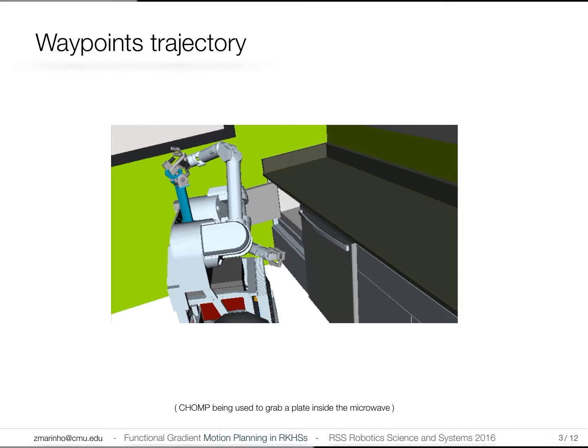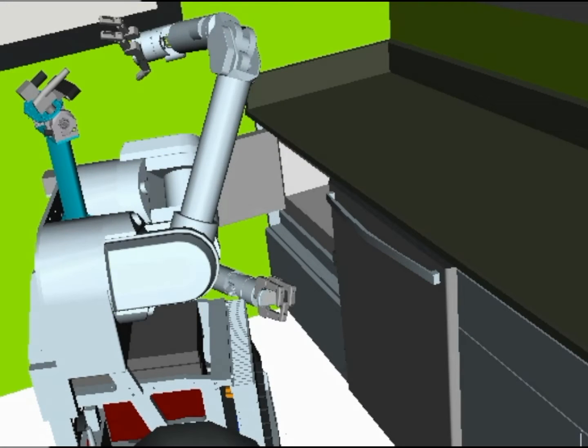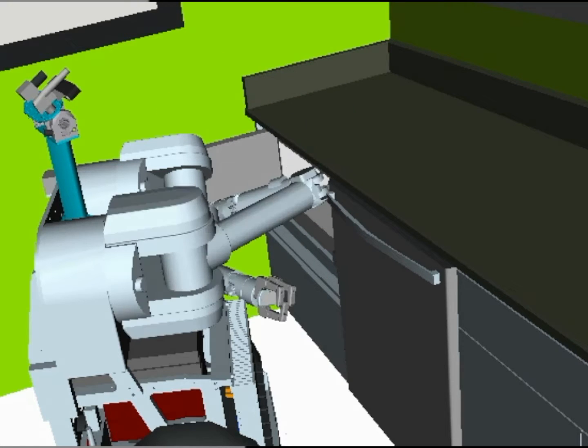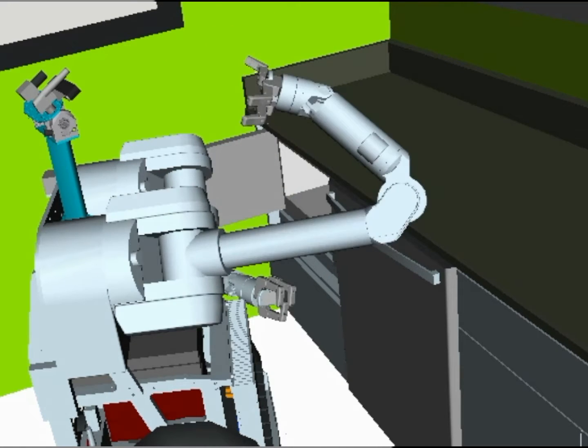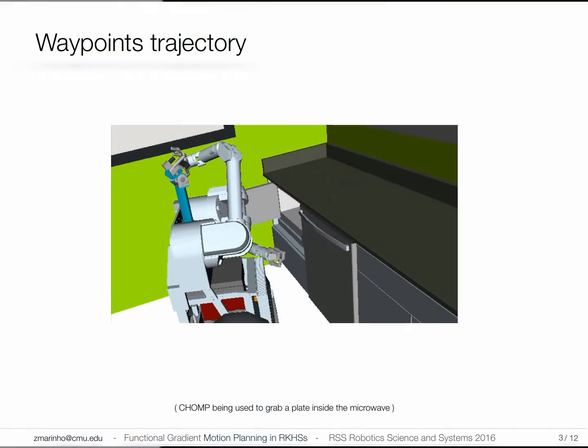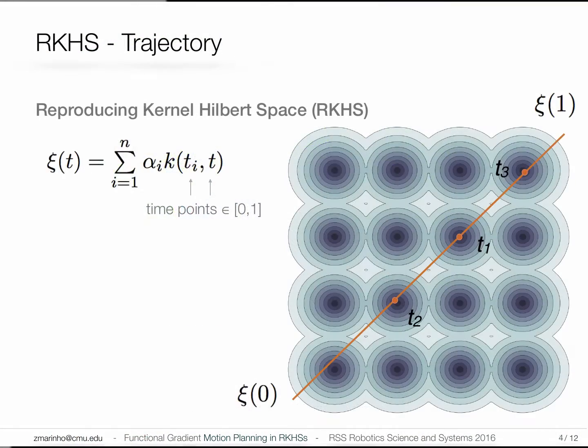Here is an example of a trajectory that represents the waypoints using another functional gradient optimizer CHOMP. We can see that you have this extraneous motion of the arm if we take large step sizes. We want to mitigate this problem by addressing trajectories directly as functions in RKHS.